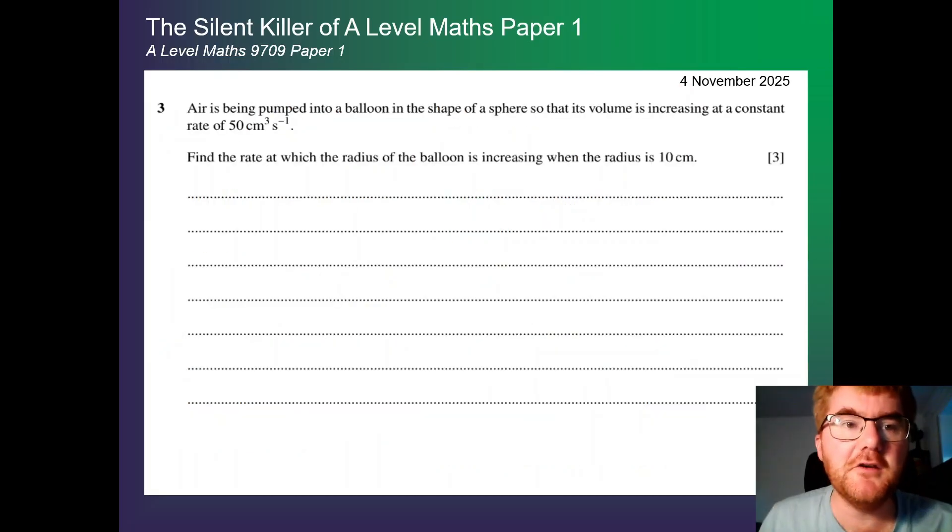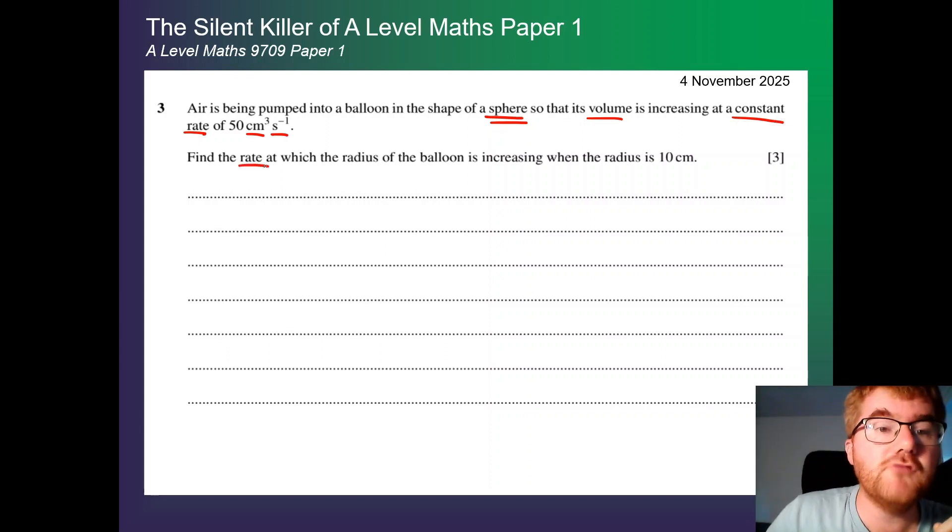So let's go through a typical exam question here. So this one here for three marks. Air is being pumped into a balloon in the shape of a sphere. That's really important. So this volume is increasing at a constant rate of 50 cubic centimeters per second. So I'm underlining very important things here. So constant rate, so give me an idea that is this topic. Find the rate at which the radius of the balloon is increasing when the radius is 10 centimeters.